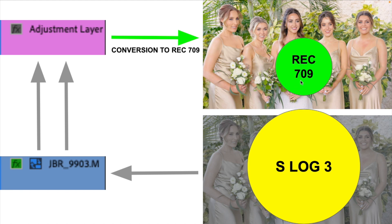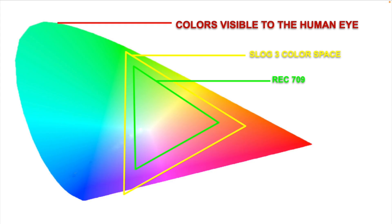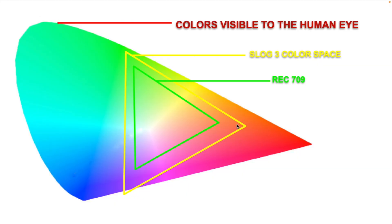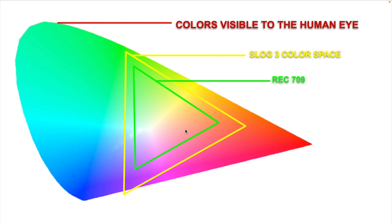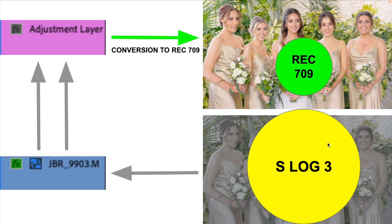So once you send the data over to Rec 709 and start making changes on the adjustment layer, you're working with a lot less information. This is called a CIE diagram — I created this version for reference purposes. It shows all colors visible to the human eye. The larger triangle represents all the colors the S-Log 3 color space can capture, and the green triangle represents the Rec 709 color space. You can see that editing on the S-Log 3 layer gives you far more colors and information to work with.